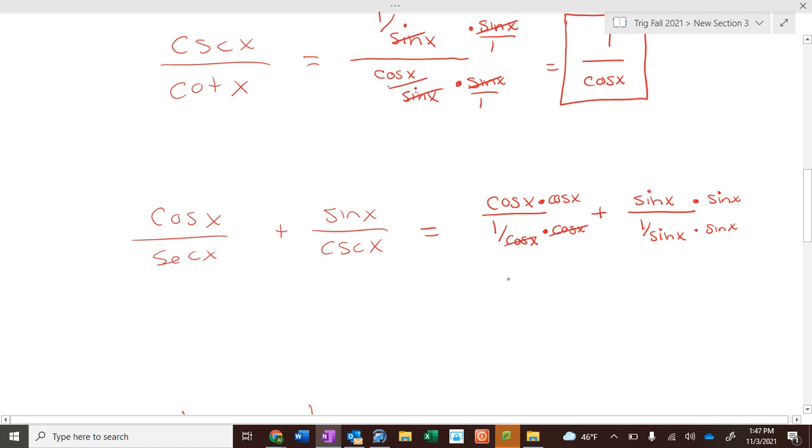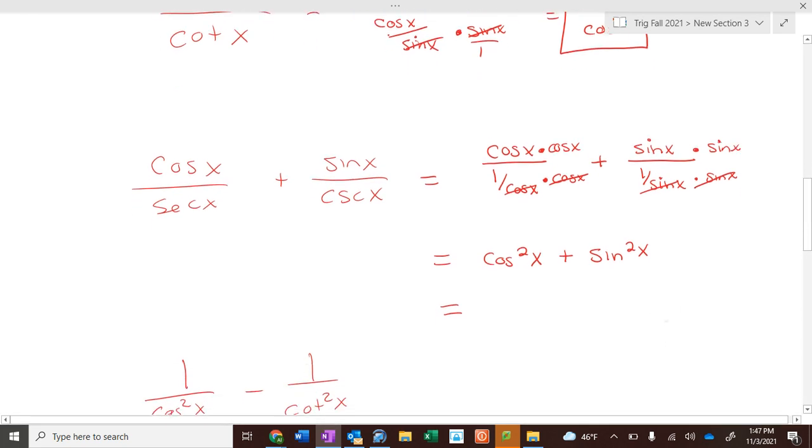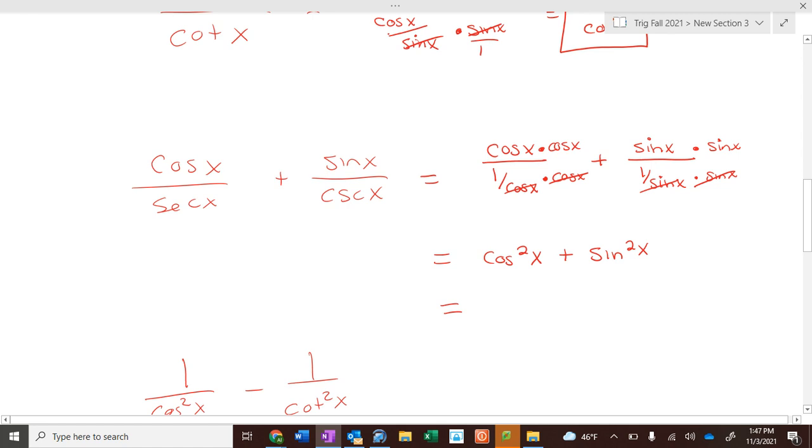So, these cancel to be 1 in the denominator. So, what does the numerator cancel to be? Cosine of x times cosine of x, which is cosine squared of x. What happens to our denominator in the second one? Cancels. So, we have sine times sine, which is sine squared of x. What's cosine squared of x plus sine squared of x from your note card? 1, because that's on one of your Pythagorean identities. So, it is just 1. That is the answer. This whole gobbledygook cancels just to be 1.